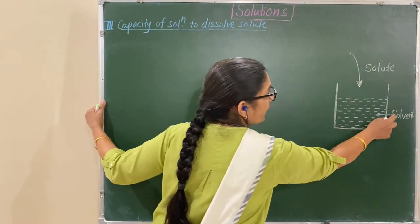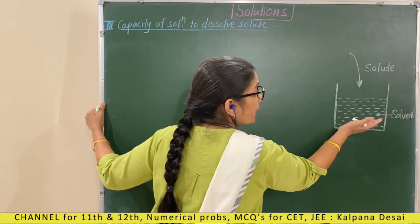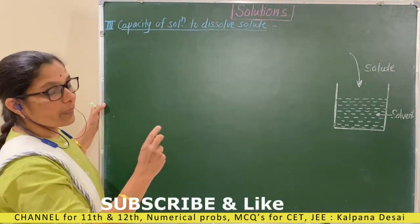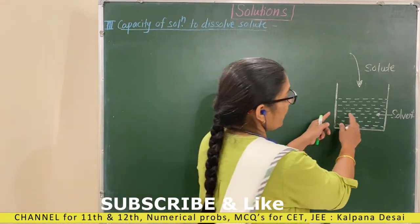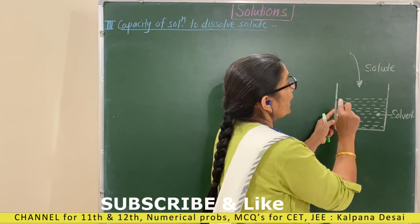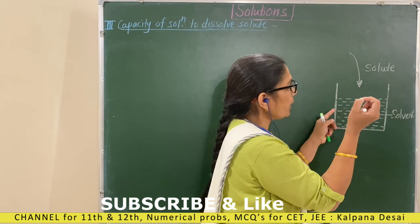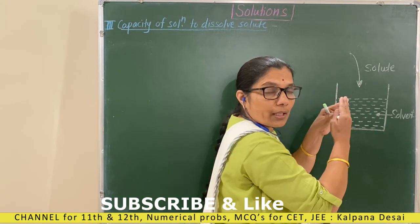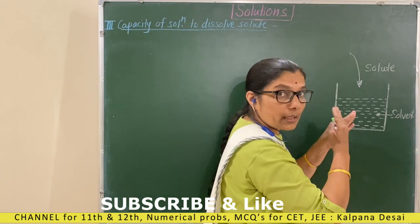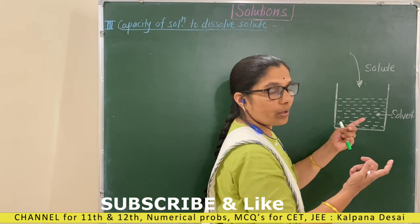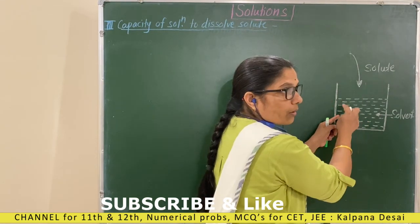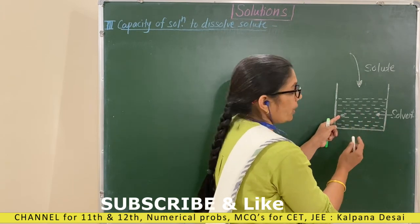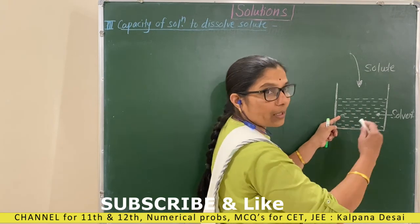Solvent, solute, solution. Now let us see what is the capacity of the solution to dissolve the solute. Add one sugar crystal. When that crystal solute is added, molecules from that crystal leave the crystal and enter into the solution. This is dissolution.